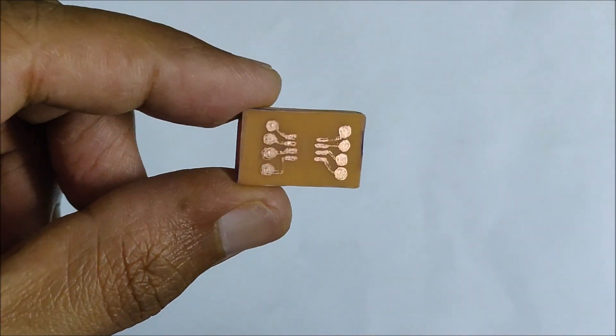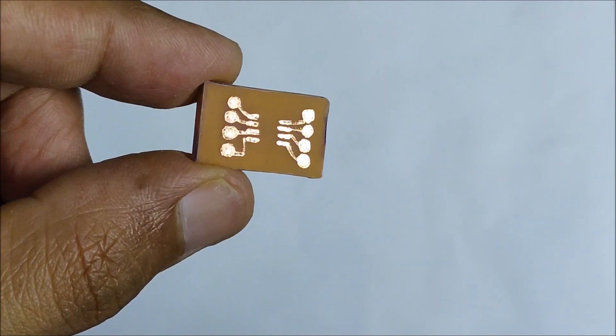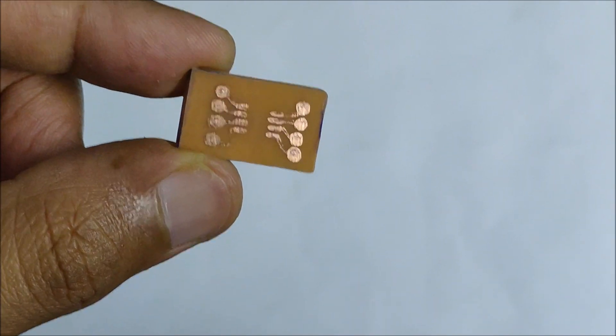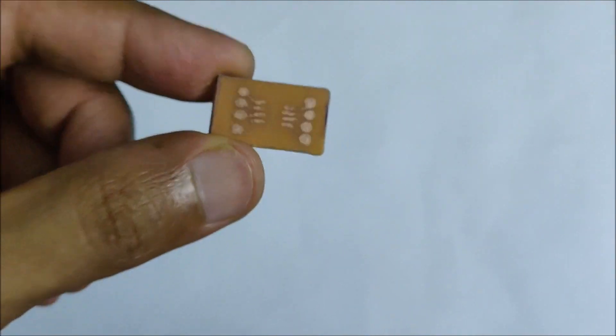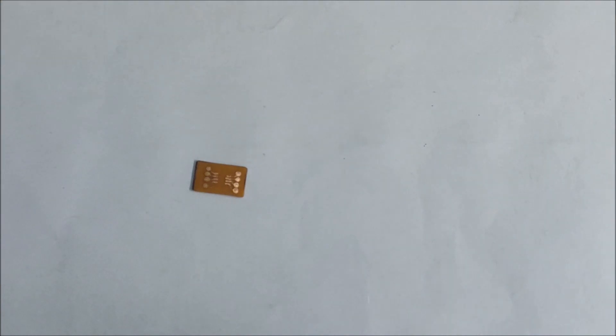After washing the board with water and some acetone, this is what it looks like. Yeah, some of the traces are not up to the mark, but then you cannot expect much from a trace made from permanent marker.